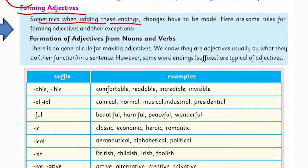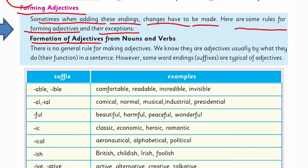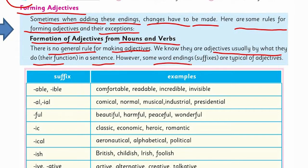Now let's come to forming adjectives. Sometimes when adding these endings, changes have to be made. Here are some rules for forming adjectives and their exceptions. There is no general rule for making adjectives — we know they are adjectives usually by their function in a sentence. However, some words with certain ending suffixes are typical of adjectives.